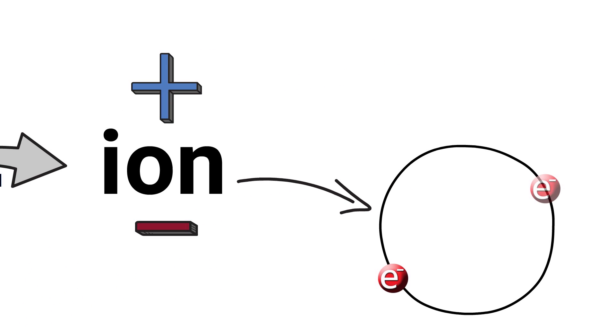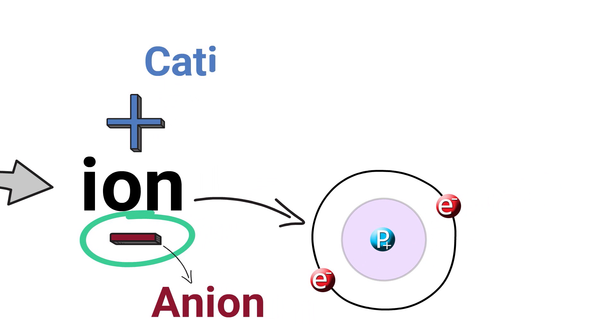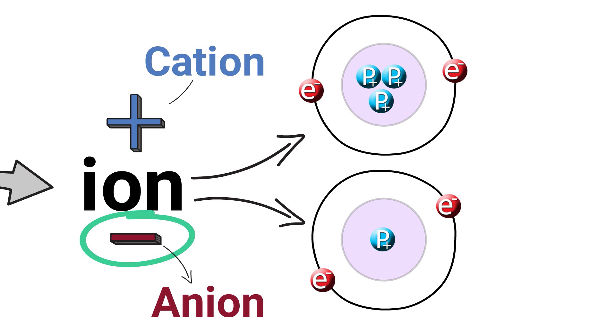An ion that has more electrons than protons has a negative charge and is known as an anion. As previously mentioned, a cation has more protons than electrons which makes it positively charged.